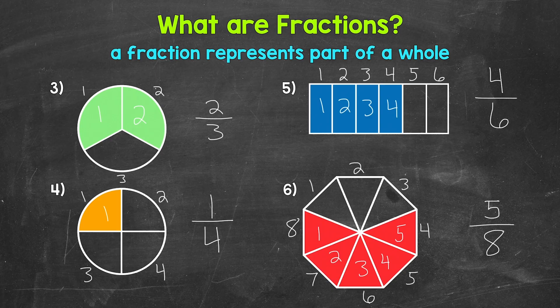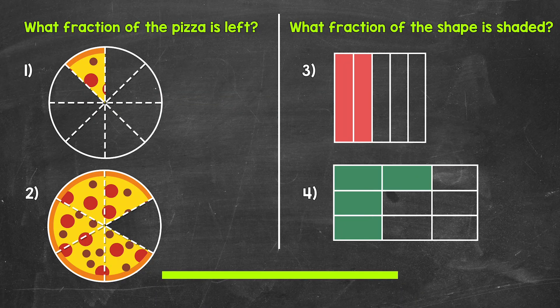So now that we've gone through some examples together, it's time for you to try some practice problems on your own. Have paper and a pencil ready. For numbers one and two, what fraction of each pizza is left? For numbers three and four, what fraction of each shape is shaded? Write a fraction for each of these. I'll give you two minutes and then we will go over the answers.